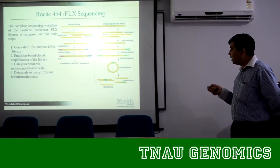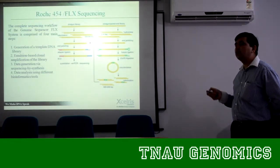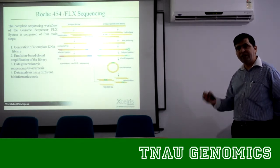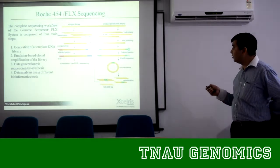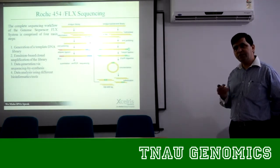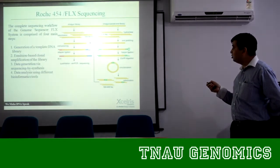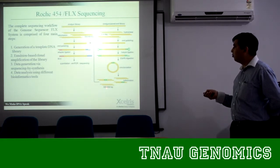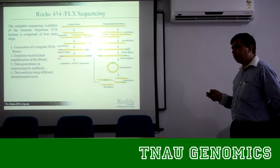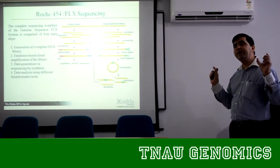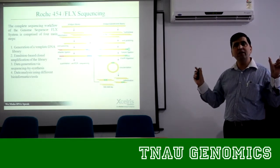If you are going to the paired-end library, it doesn't mean you have to use 2 to 4 KB — it depends on the kind of library you want to make: 2 KB, 3 KB, 4 KB, 5 KB, 6 KB, 8 KB, 20 KB, whatever the library you are making. You shear the fragment to a low size. Suppose if I am making a 20 KB library, I shear my genomic DNA to 20 KB, polish this DNA, make a hairpin, do the digestions, circularize again, and then you get the 500 to 800 base pair fragments.